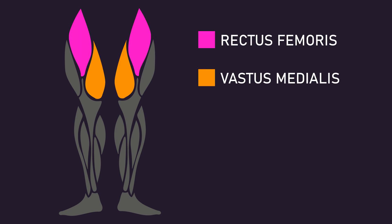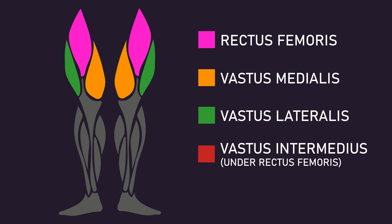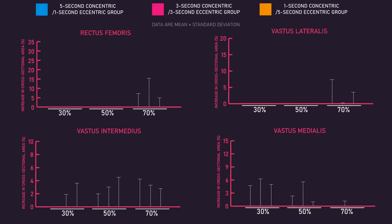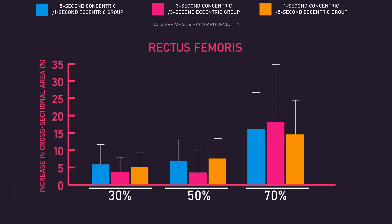The cross-sectional area of the rectus femoris, vastus medialis, vastus lateralis, and vastus intermedius was measured at 30%, 50%, and 70% of the thigh length. At 50% of the thigh length for the rectus femoris, the 5-second concentric / 1-second eccentric group and the 1-second concentric / 5-second eccentric group both experienced similar but statistically greater increases versus the 3-second concentric / 3-second eccentric group.